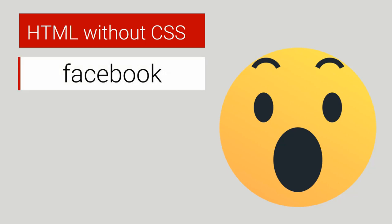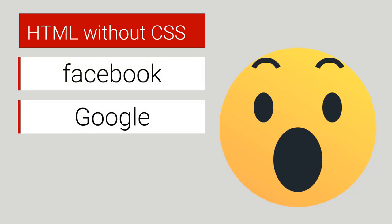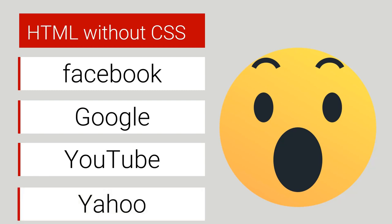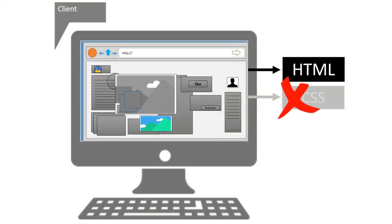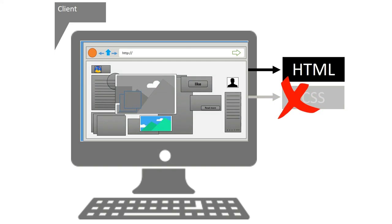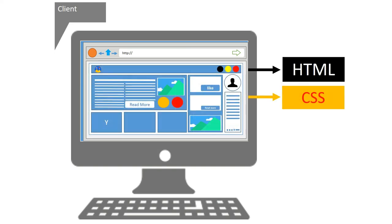I tried to collect some logos of famous websites and remove the CSS to see how they could look like without CSS. That's how Facebook could look like without CSS, that's how the Google logo could look like without CSS, that's how the YouTube logo could look like without CSS, and that's how the Yahoo logo could look like without CSS. Imagine how things could be without CSS. Now we come back to our web page — without CSS everything is just black and white, but once we put CSS back, things are colored, shaped, and organized.